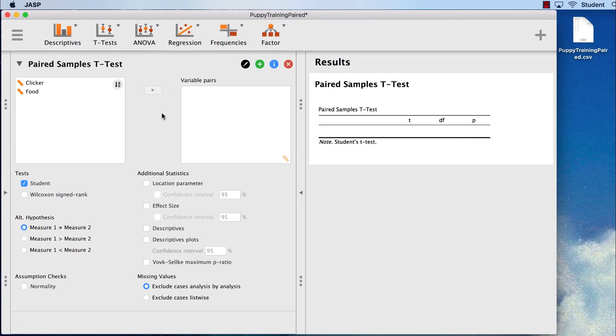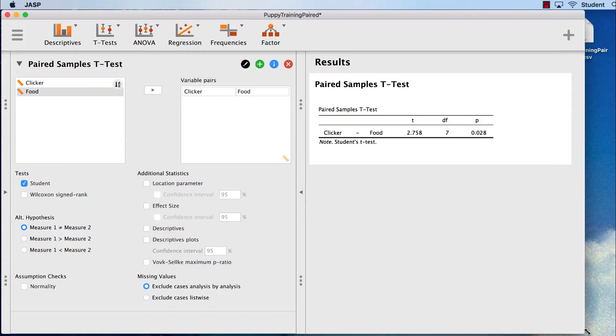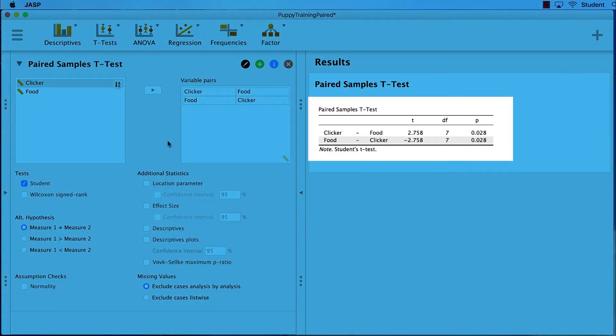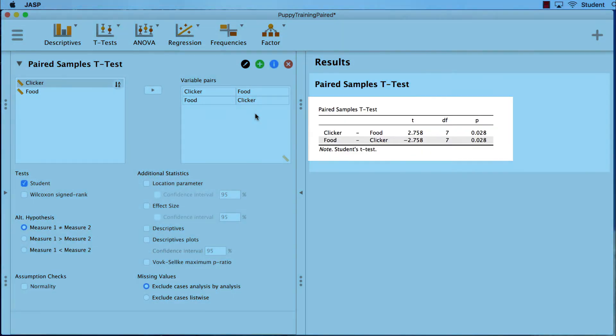We need to place the variables according to their pairs. If this was a before and after design, we would enter the before first and then the after score. In our matched pair design, we will move the clicker group into the variables pairs box first, and then their paired food groups scores second. If we had a larger data set with more variables, we could add more pairs. Reversing the order of the pairs gives us exactly the same output, so we will not need to do that.